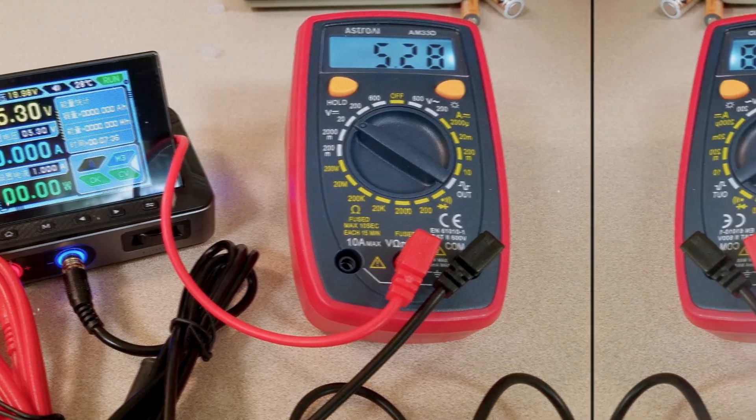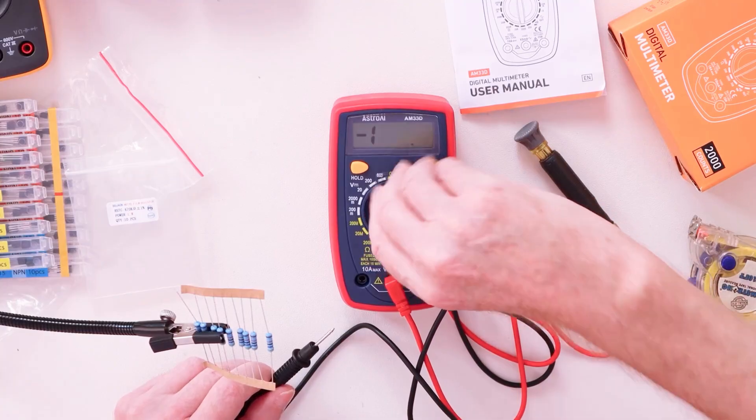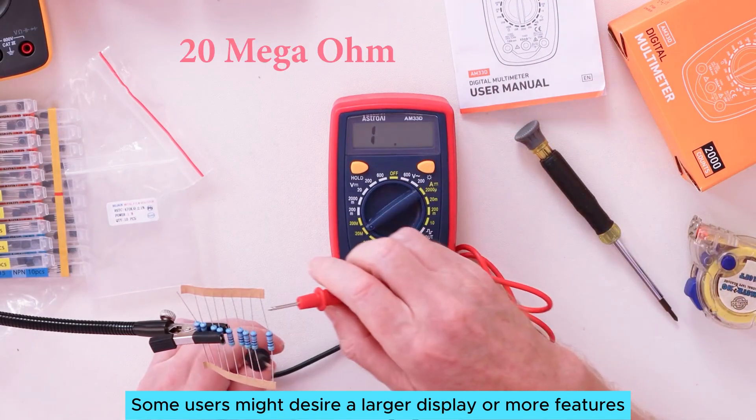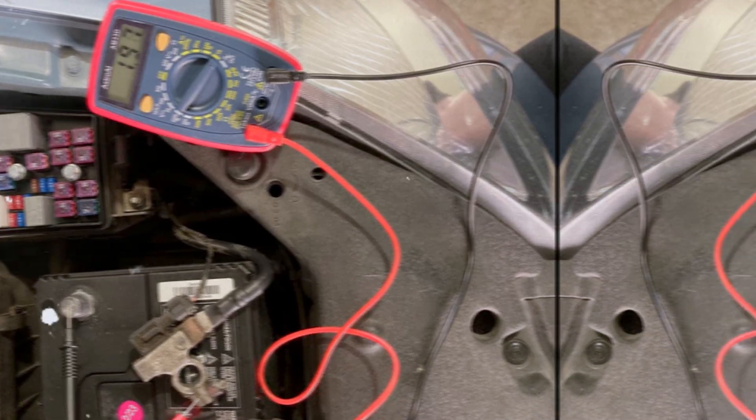Thanks to its backlit LCD screen, visibility remains top-notch in dim conditions. Being able to see readings clearly enhances the experience, especially in tight spaces where lighting might not cooperate. Some users might desire a larger display or more features, but this multimeter focuses on essentials without distractions.